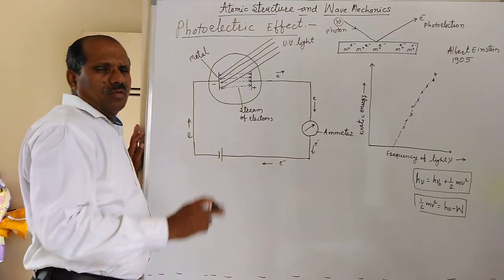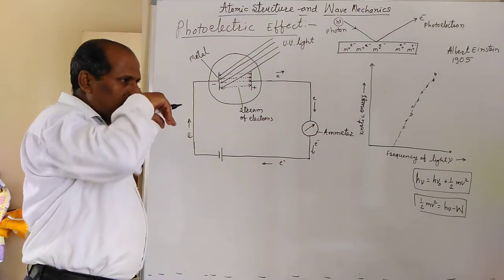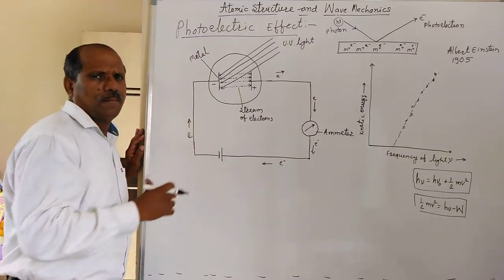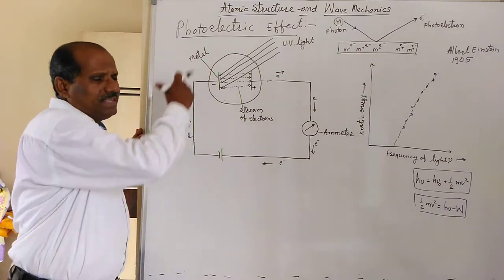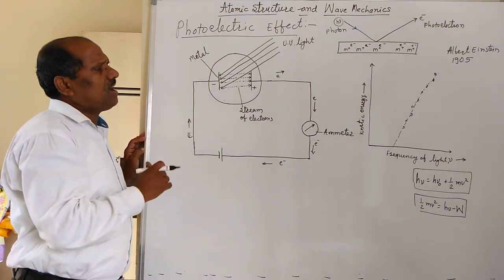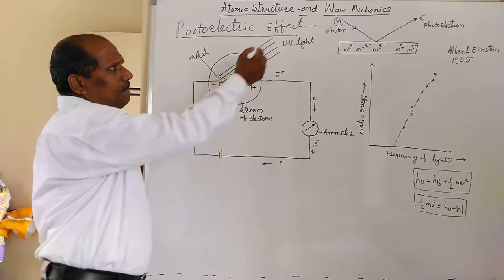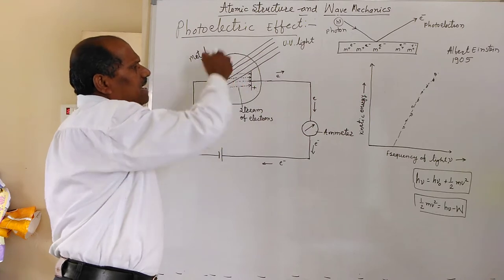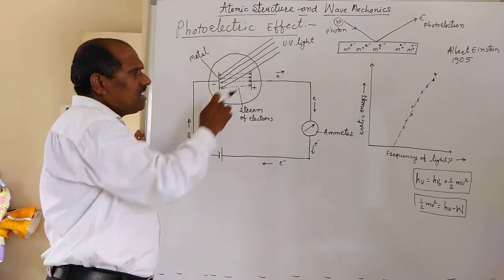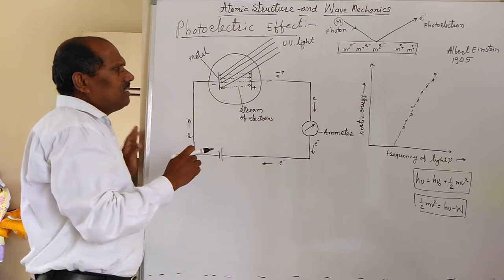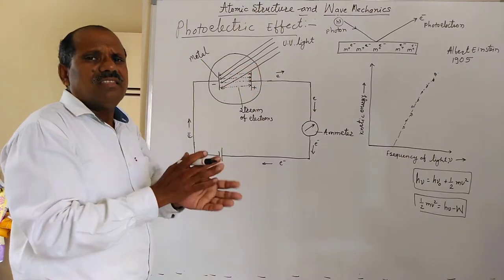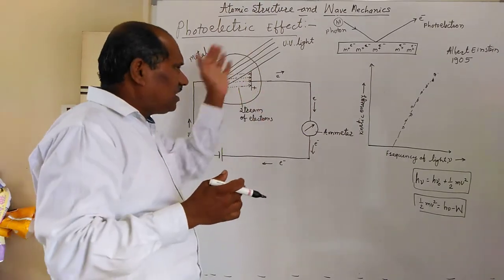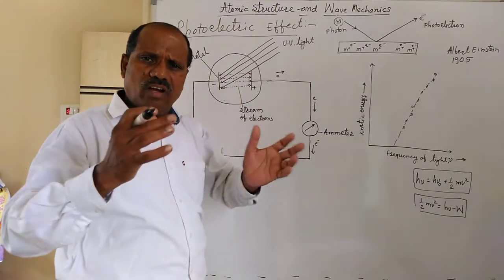Photoelectric effect. The photoelectric effect may be explained with the help of Planck's quantum theory. When a beam of sufficiently high frequency is allowed to strike on a metal surface in a vacuum, electrons are ejected. Those ejected electrons are called photoelectrons, and this phenomenon is called the photoelectric effect.